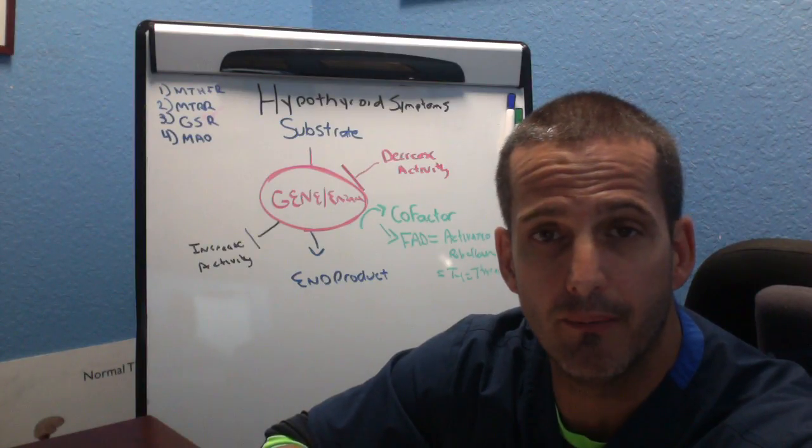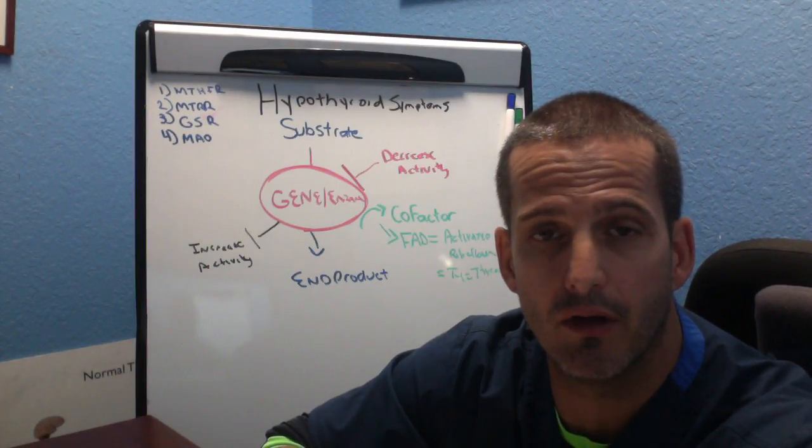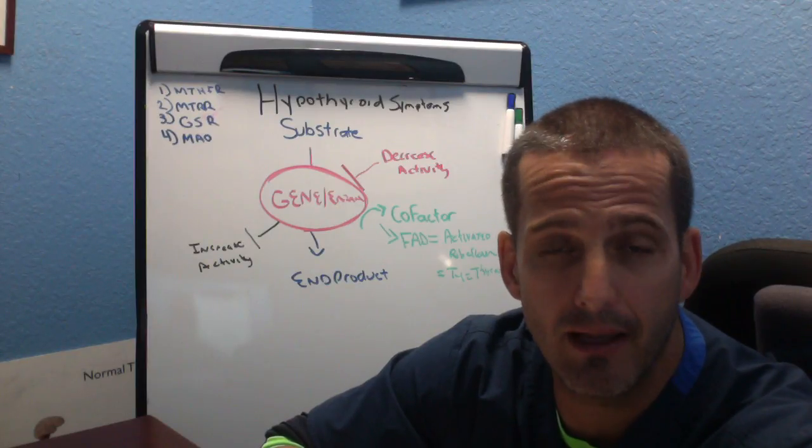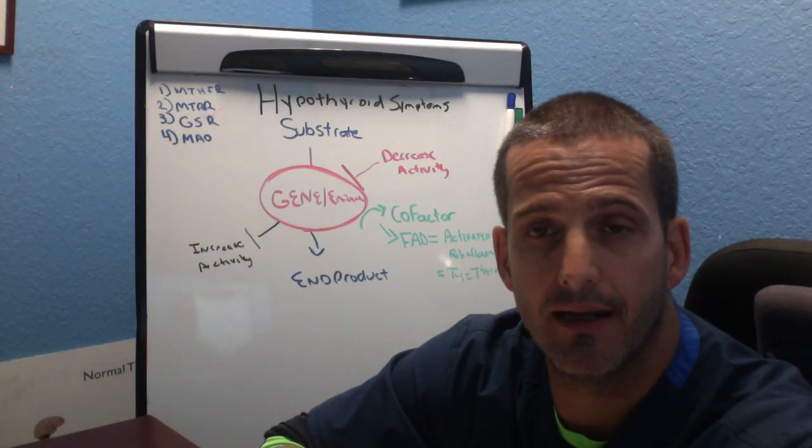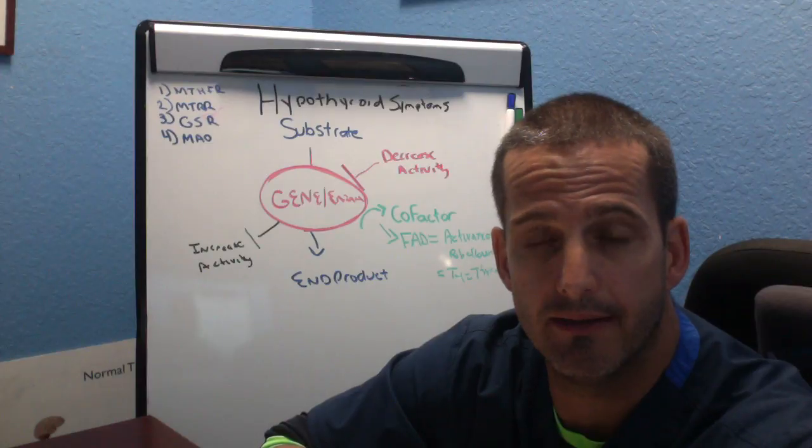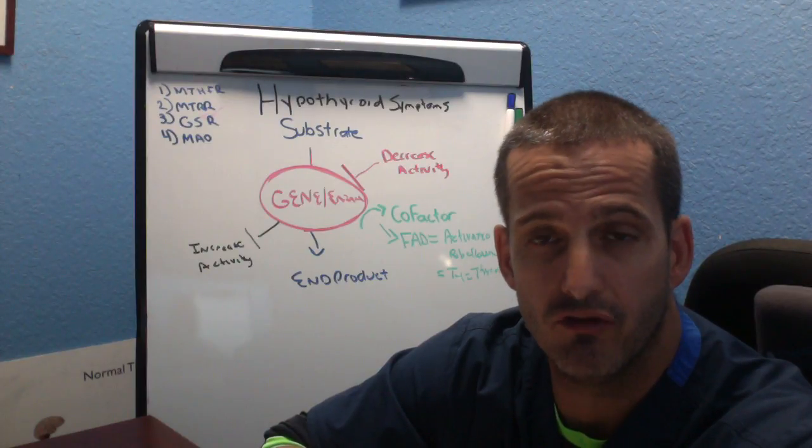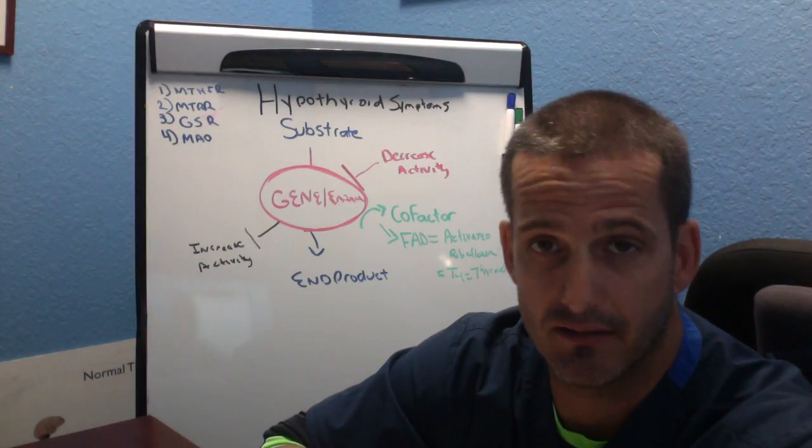So we do 23andMe testing interpretations where we look at your biochemistry and we understand how your hypothyroid is impacting some of your genetic weak links and causing the perfect storm.